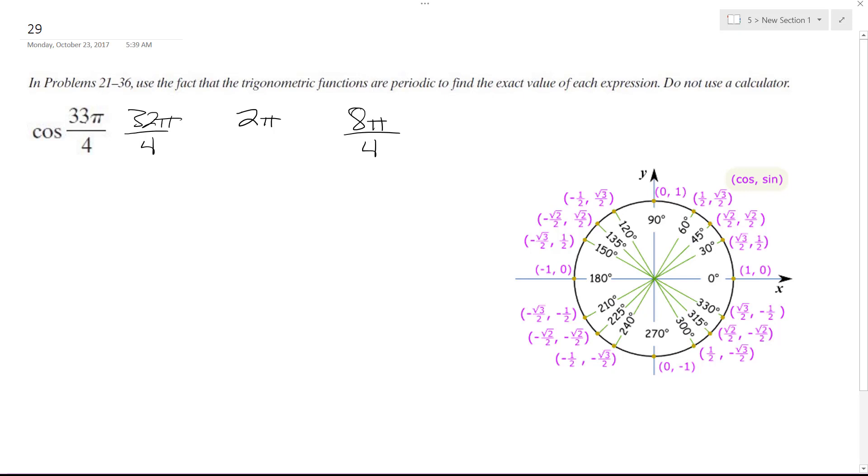So that's, this is 4 trips around the circle and then π over 4. And π over 4,